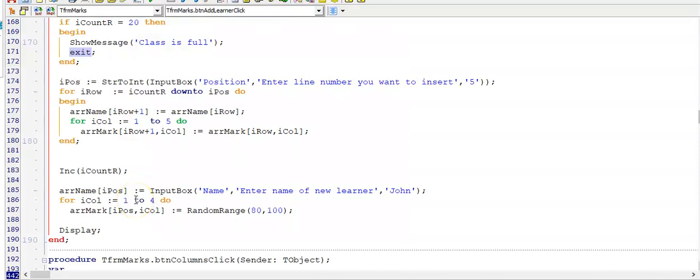So here's the memo for the button to add a learner. So we're adding a row. It would be important to first test if your array is full. So if I have reached 20, I can't add another learner because I've declared an array with 20 rows. And if I add another learner, my program will then crash with a runtime error saying access violation. And now I'm asking the person what position they want to add this person into.